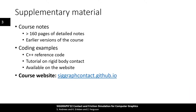In addition to this presentation, you will find many more details in the course notes, which comprise more than 160 pages of mathematical details, pragmatic advice, and references about frictional contact simulation. C++ code examples for several of the models and methods can be found on the course website at siggraphcontact.github.io. We intend to regularly revise and update the course notes and programming examples, and the latest version can always be found on the website.